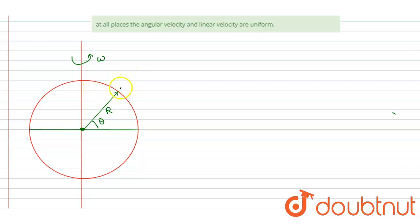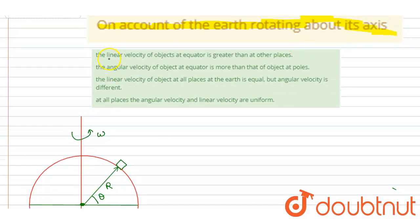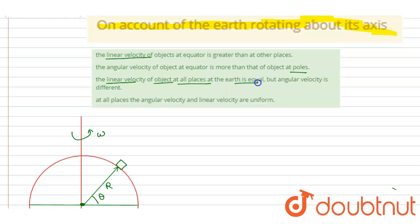At any point, if you calculate the velocity, looking at the options — they concern linear velocity and angular velocity. The first option states that the linear velocity of the object at the equator is greater than at other places. The second option states that the angular velocity of the object at the equator is more than that of the object at the poles.